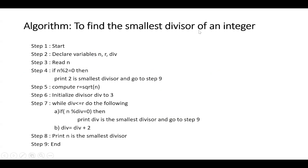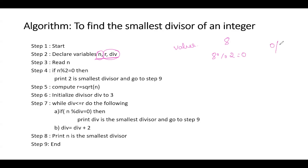Now let us go through the algorithm to find the smallest divisor of an integer. We declare variables N, R, and div. N is the value whose smallest divisor we are trying to find. We read the value of N. Taking an example of N = 8: if N mod 2 equals 0 — 8 mod 2 is 0 — then we print that 2 is the smallest divisor. We go to the end step and the algorithm terminates. This handles the even number situation.